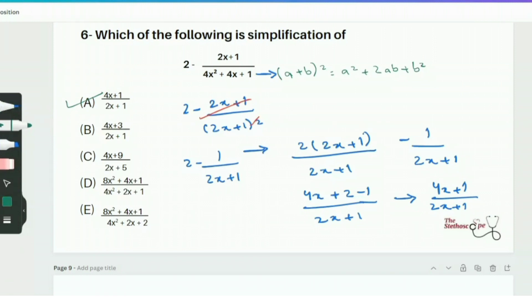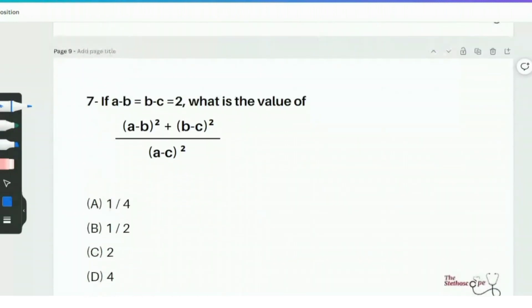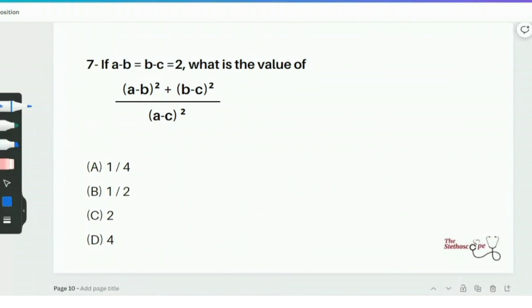So here in this question I have explained every step I did so it consumed a lot of time. But actually when you will be doing these questions in the IMAT exam it's not going to take that much long. Moving towards question number 7, if A minus B equals B minus C equals 2, what is the value of A minus B whole square plus B minus C whole square over A minus C whole square. This question is a lot easier than it looks.